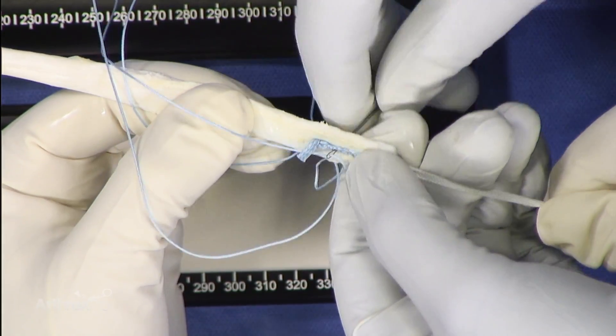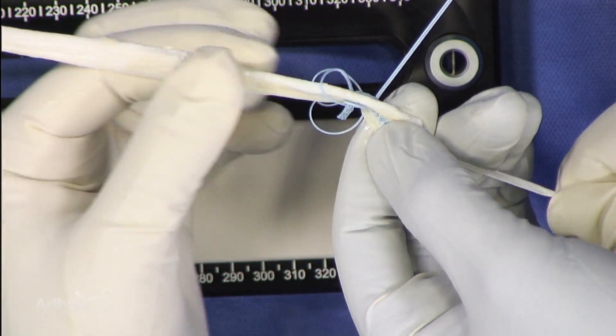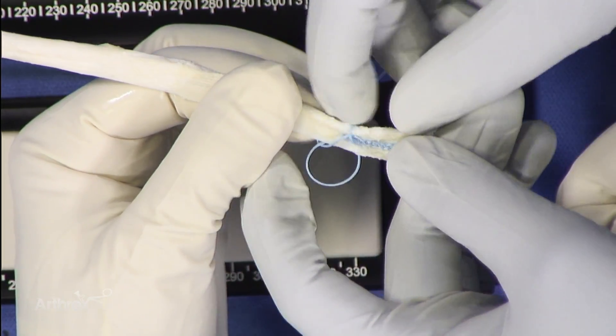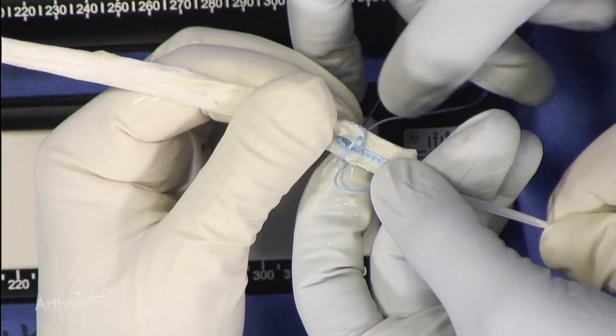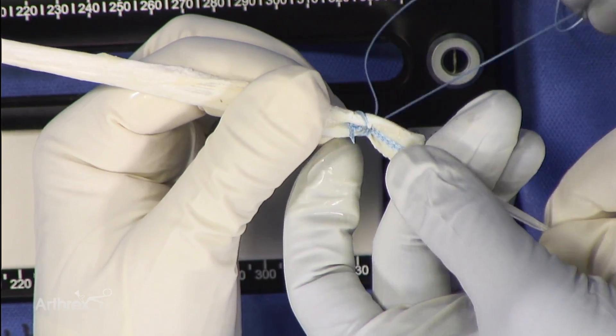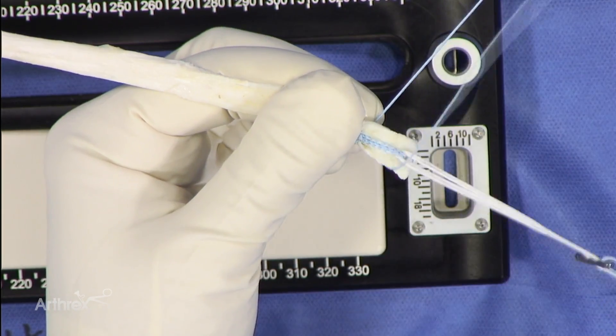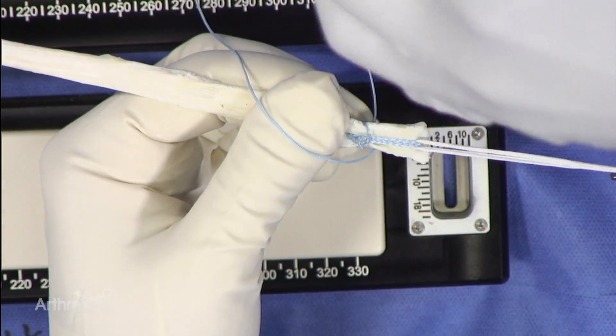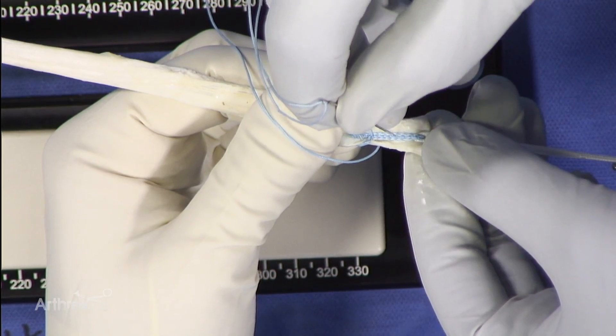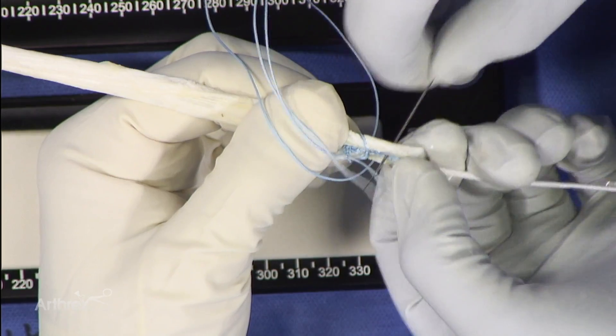And now we are ready to pass our fiber tag like a standard fiber loop technique. So we'll come through. Some of the grafts are a little bit taut, so you can do this with your hand or you can use a needle driver. And you come through.